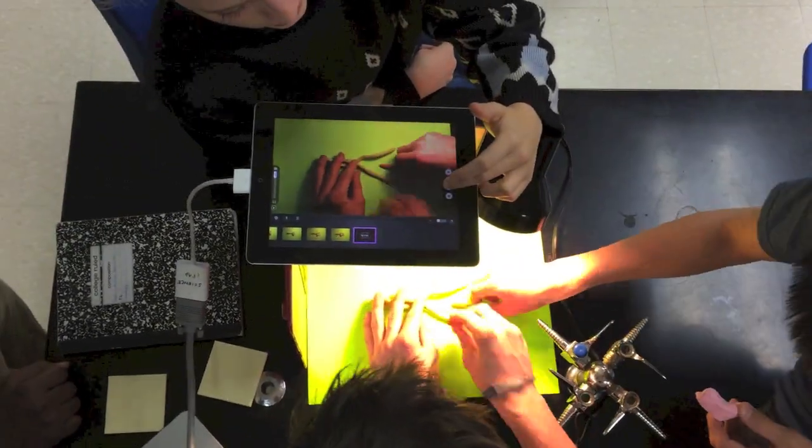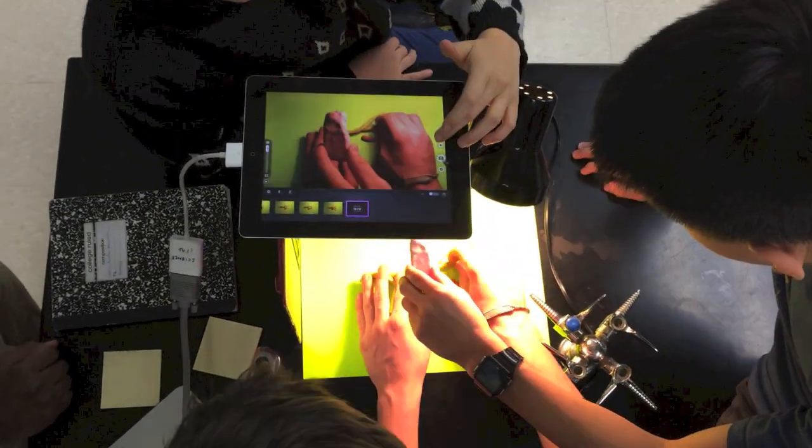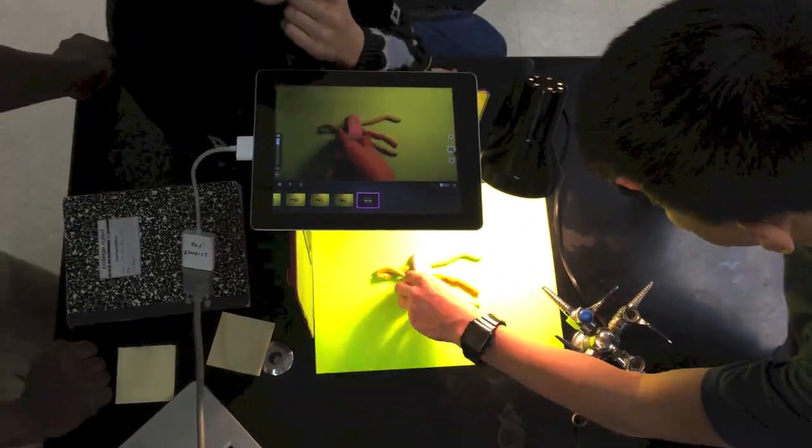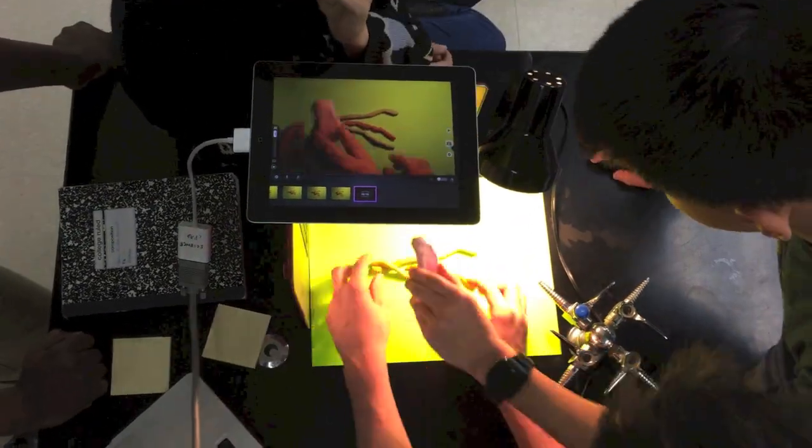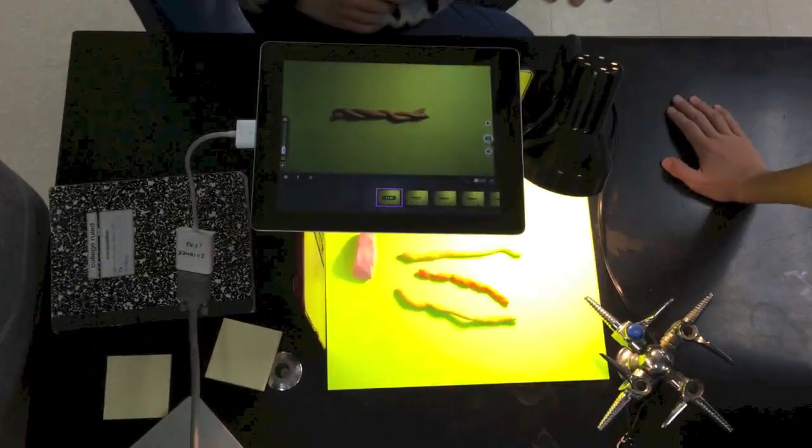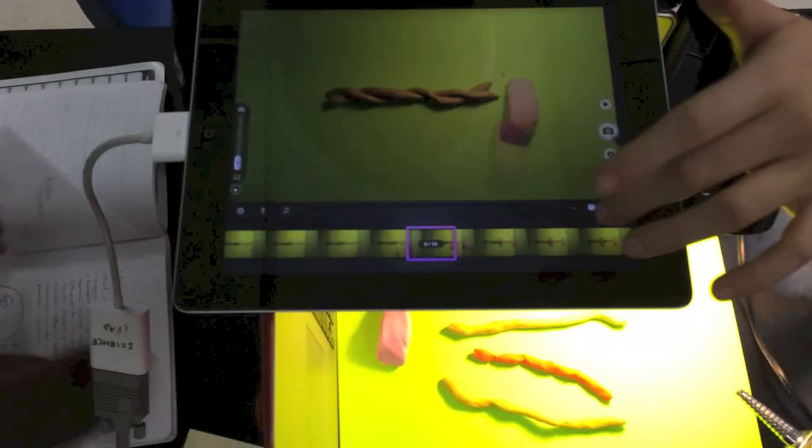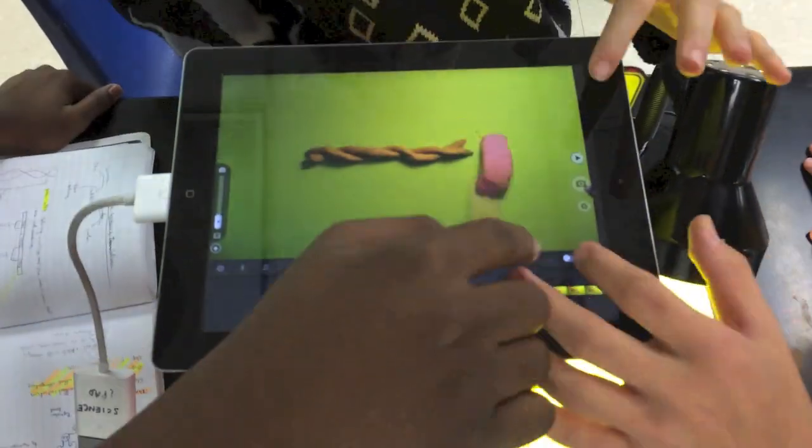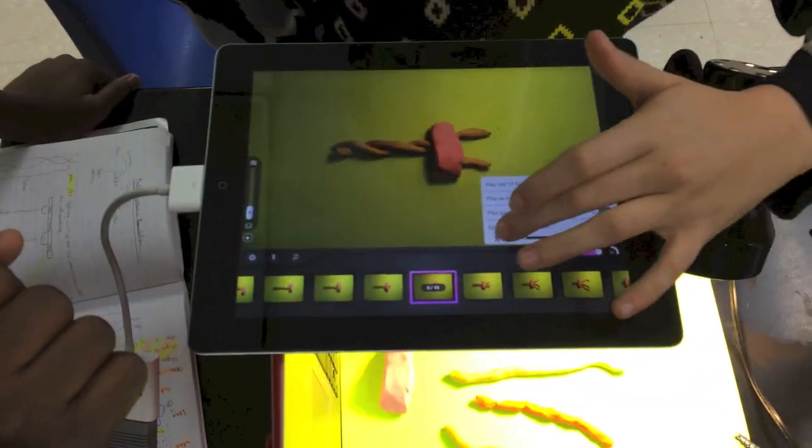As you can see the students use colored plasticine to create the different structures that were involved in the process of protein synthesis. They laid these over a colored card background and used a stop motion app to capture a sequence of images that when played back demonstrated their understanding of how the process took place.